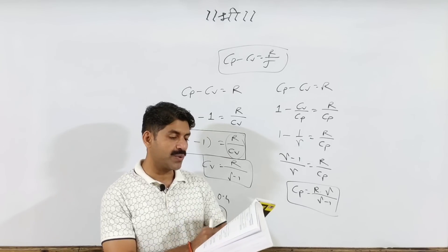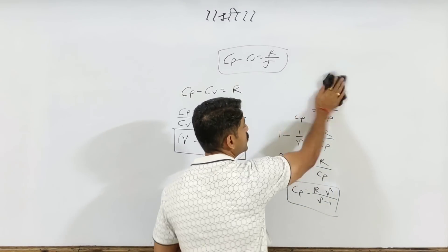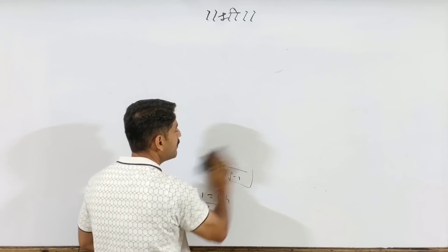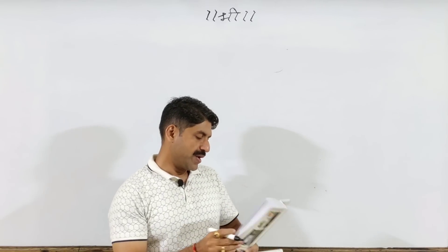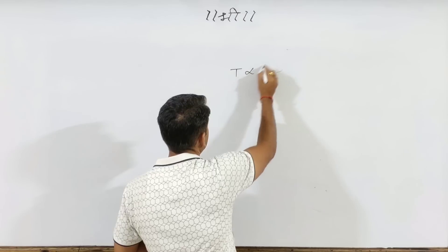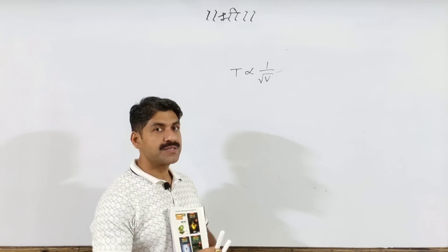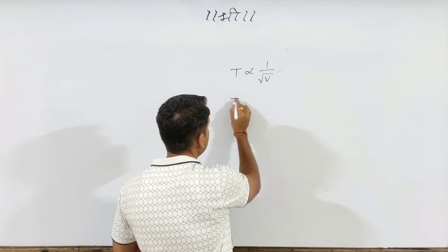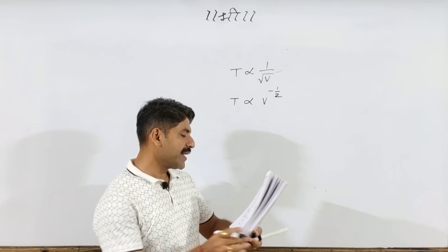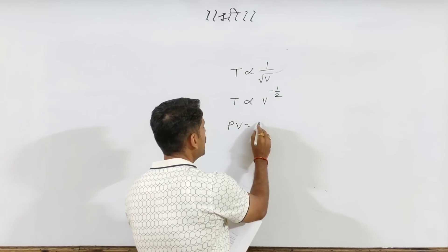One problem remains. The problem is: a gas expands adiabatically such that its temperature is inversely proportional to the square root of volume — T is proportional to 1/√V, or equivalently T times V to the power 1/2 equals constant. We need to find gamma, the ratio Cp/Cv. Using the ideal gas equation pV equals nRT for one mole, p equals RT/V.